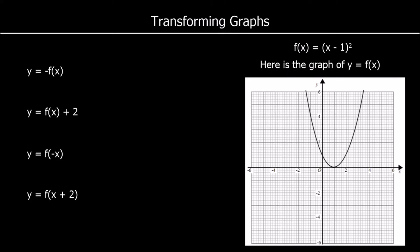Here we're going to look at the transformation of graphs. We've been given an original graph called y equals f of x. We're not usually told what the function is — we're just told it's some function of x. In this case, the function is x minus 1 squared, so y is equal to x minus 1 squared.